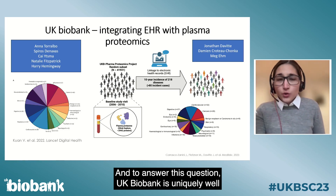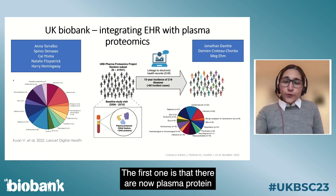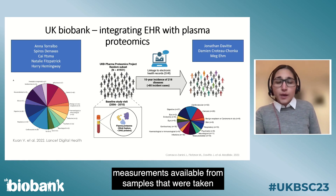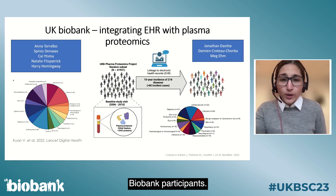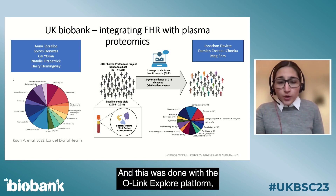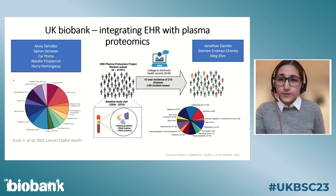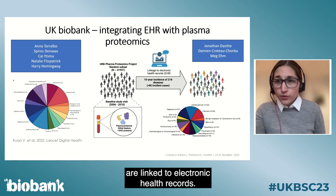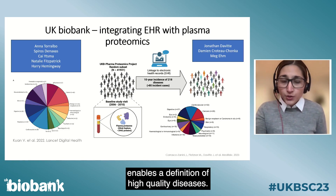To answer this question, UK Biobank is uniquely well-suited for two main reasons. The first is that plasma protein measurements are now available from samples taken at the baseline study visit in a subset of UK Biobank participants, using the O-Link Explore platform, which targets around 3,000 different proteins. The second reason is that all participants are linked to electronic health records, which enables high-quality disease definitions.